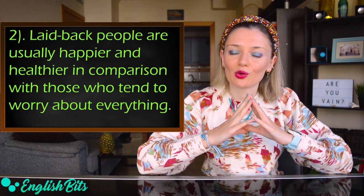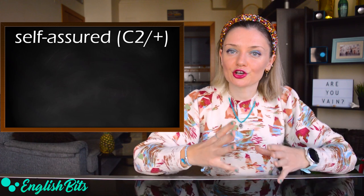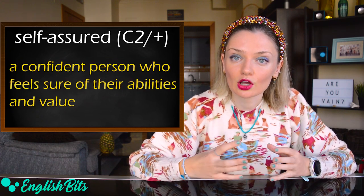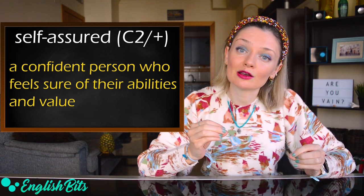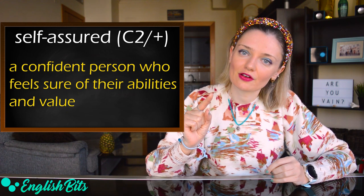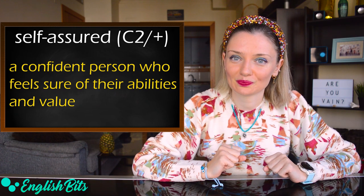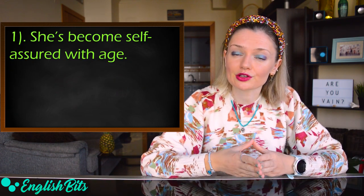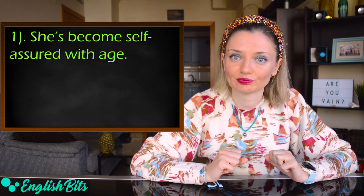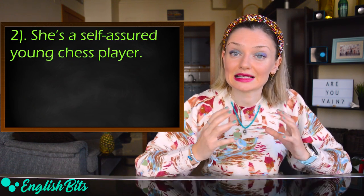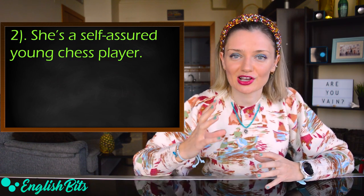Two more to go. Number nine: self-assured. A self-assured person is someone confident who is sure of their abilities and value — it's a synonym of assertive, the adjective we've seen previously. For example: She's become self-assured with age. And another: She's a self-assured young chess player.